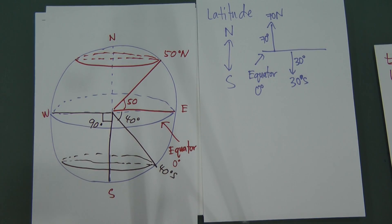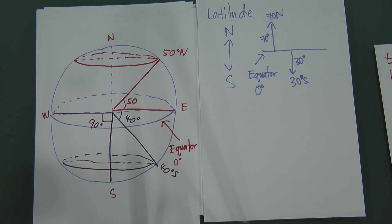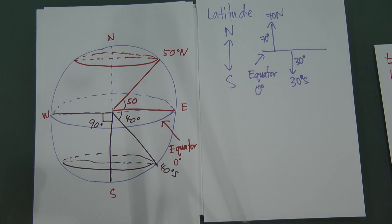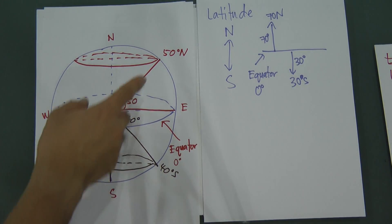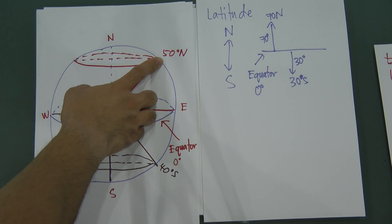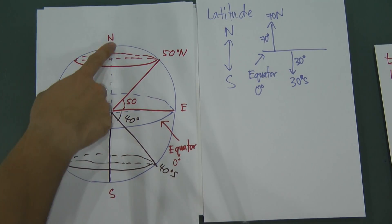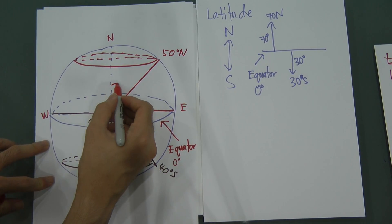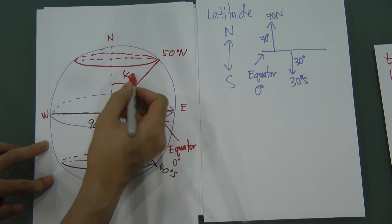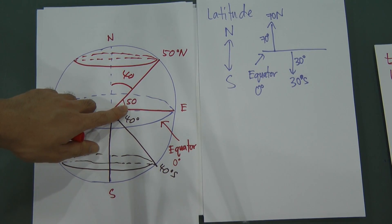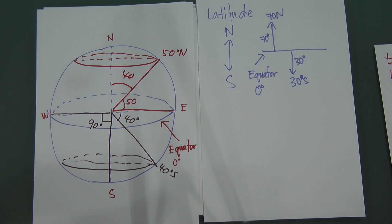Let's look at an example. If the exam gives you a coordinate at 50N and asks for the distance from that point to the North Pole, you need to find the angle between them. From the equator to the North Pole is 90 degrees, and the coordinate is at 50 degrees, so you do 90 minus 50 to get 40 degrees.